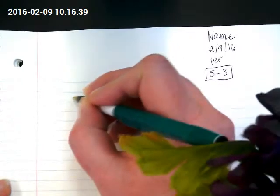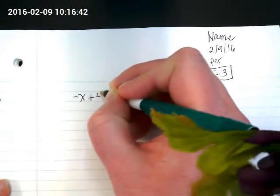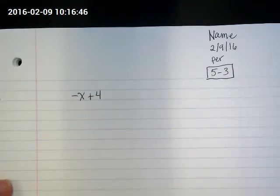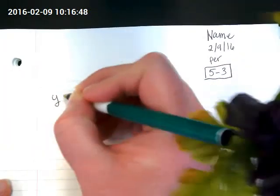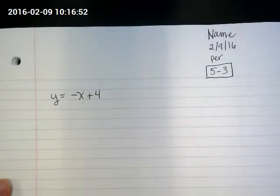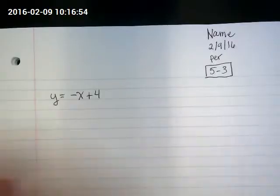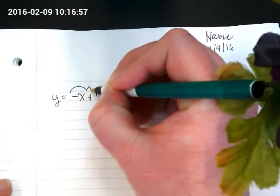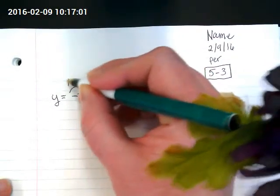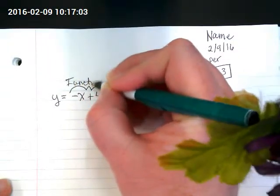So a couple of quick review things right now. If I have negative x plus 4, that is a rule. And we could rewrite that as y equals negative x plus 4. And if I want to show that this is the rule, we're just going to put a little vocabulary around this. This is called the function rule.